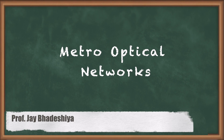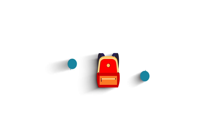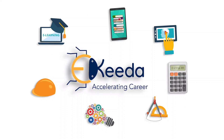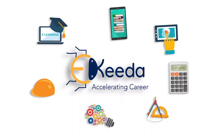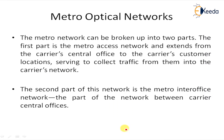Here we are going to learn about metro optical networks. The metro network can be broken up into two parts. The first part is the metro access network, which extends from the carrier's central office to the carrier's customer location, serving to collect traffic from them into the carrier's network.